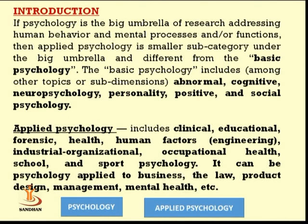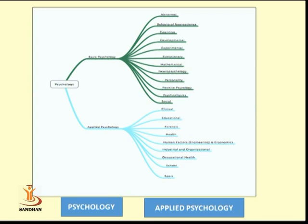So we can say that applied psychology is something related to the professional expertise of applying psychology to solve the problems of human behavior. You can see there are two basic categories: basic psychology and applied psychology.